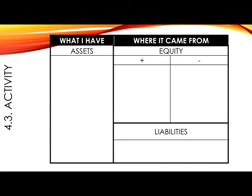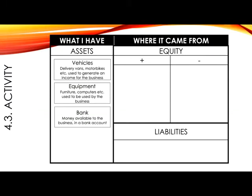The accounts that you would need to show in your assets column should be your vehicles. This would include delivery vans, motorbikes, etc., that you are using to generate an income for the business, to deliver your goods, your products, and services, either from your suppliers or to your consumers. You would also need to include your equipment — equipment refers to any office furniture, computers, machinery in a factory, etc., that are used by the business. And lastly, bank, which represents money available to the business being held in a current bank account. Obviously, there are many more assets one could have, but these are the ones used for this example.